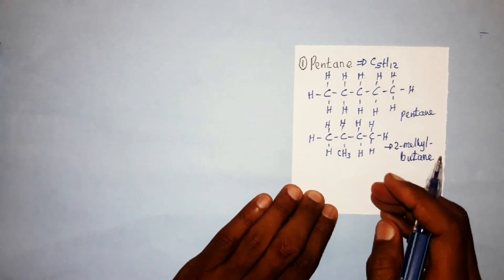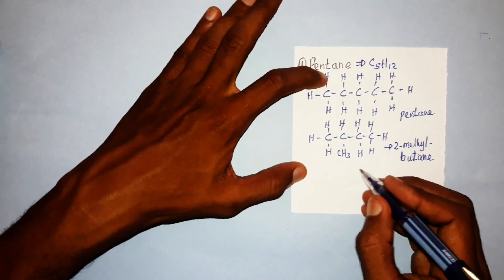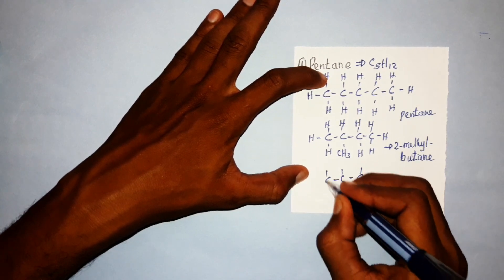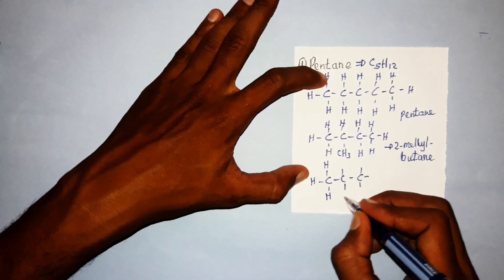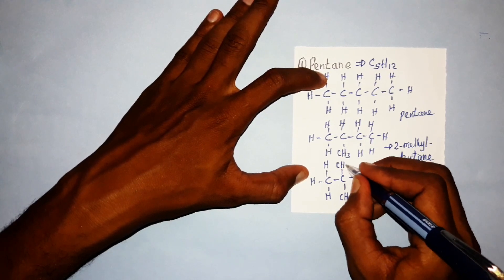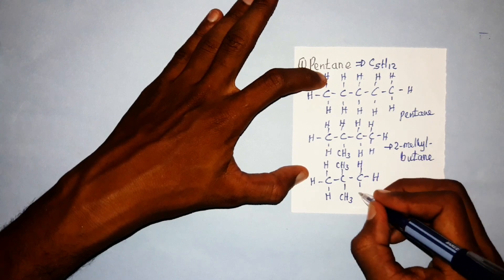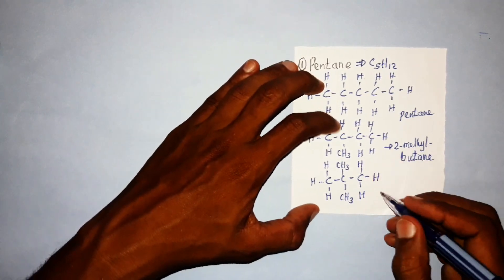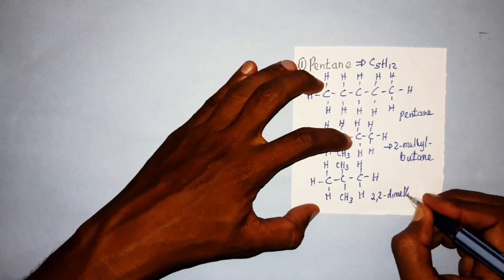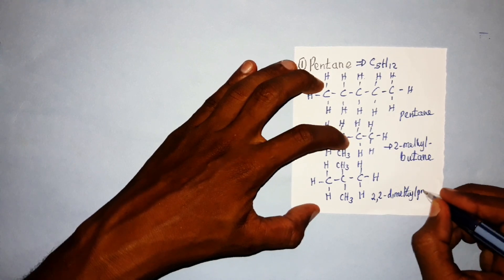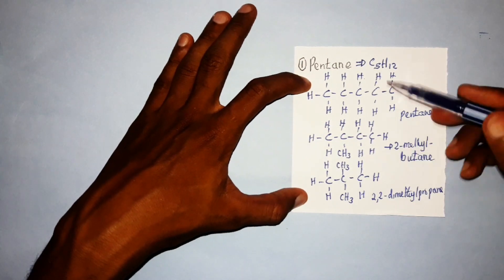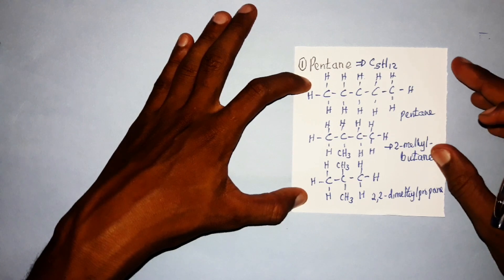You can further modify the structure by removing another terminal carbon, leaving a three-carbon chain. The two removed CH₃ groups are both attached to the middle carbon. This gives two similar branches, so you use the prefix 'di-'. The name becomes 2,2-dimethylpropane, where propane is the parent name. All three structures have different arrangements but the same molecular formula, C₅H₁₂.